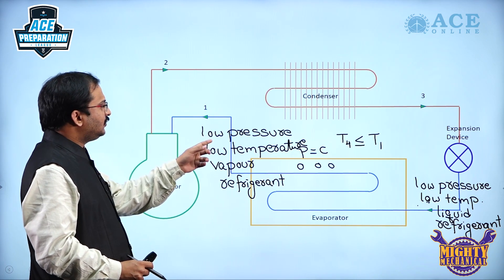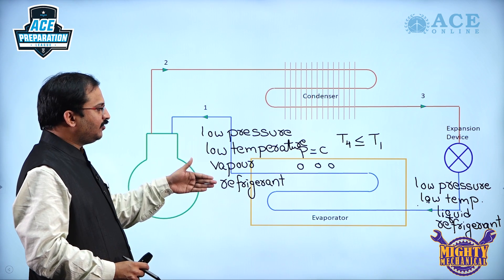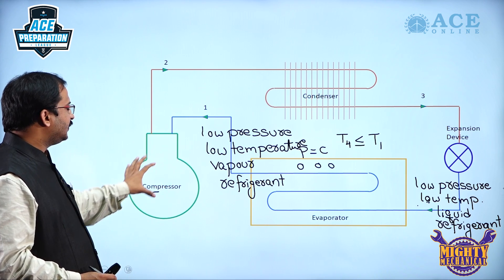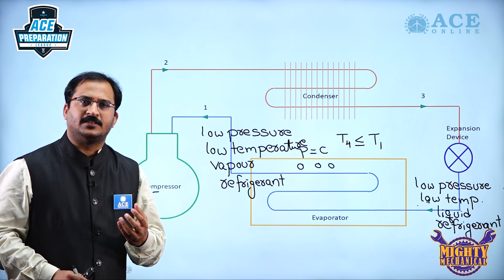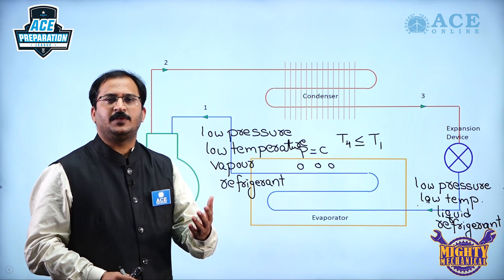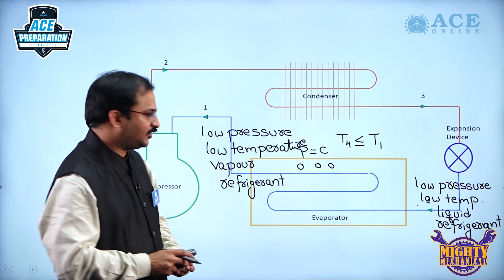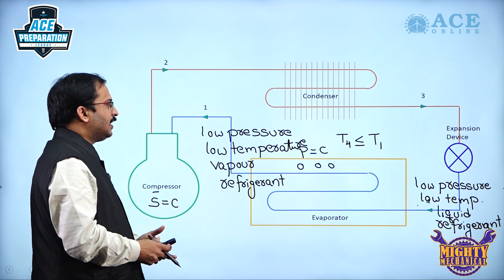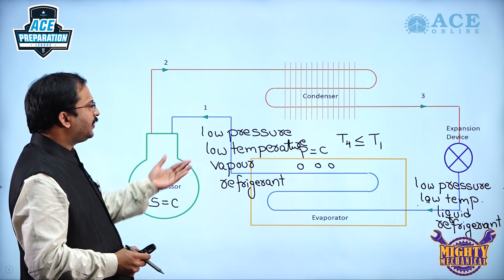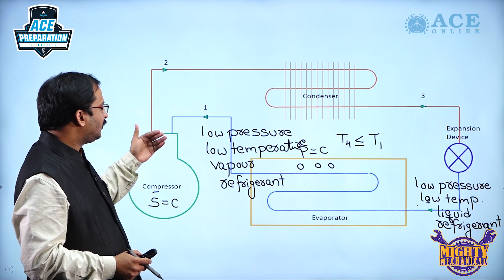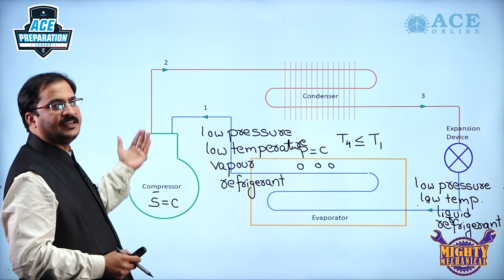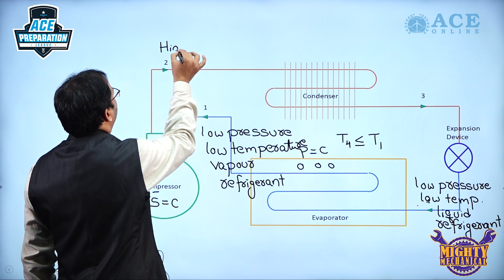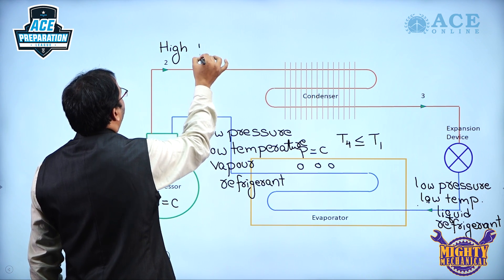This low pressure, relatively lower temperature vapor refrigerant enters into the compressor. In the compressor, ideally speaking, isentropic compression occurs — entropy remains constant during compression — and due to compression the pressure and temperature of the vapor refrigerant increase. At the exit from the compressor we have high pressure, high temperature vapor refrigerant.